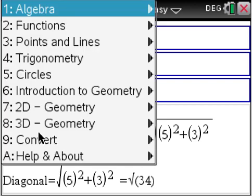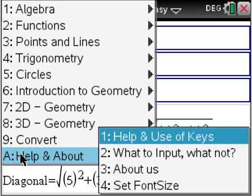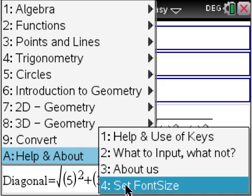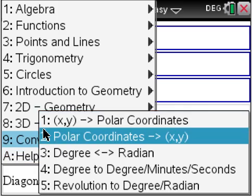And of course, in all of our apps, we have the help and about section, which basically says what to input, what not to, about us, font size, make it bigger, smaller, help, and the use of keys. All very important.